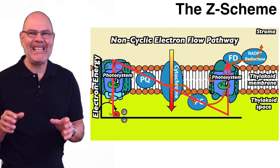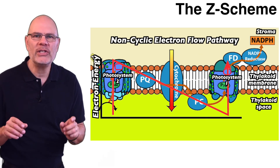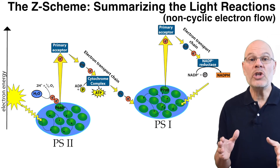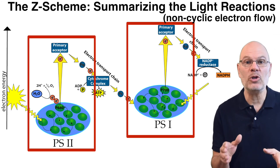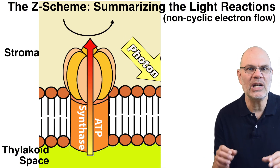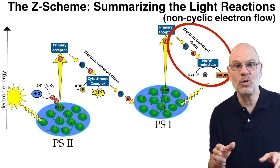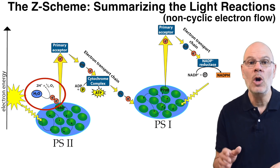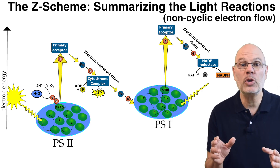Non-cyclic electron flow is also called the Z scheme. Electrons rise in energy in photosystem II, then fall as they go through the electron transport chain of photosystem II, then rise in energy again as they go through photosystem I. To summarize the light reactions: light is captured by photosystems and converted to electrical energy. In photosystem II, electrical energy pumps protons into the thylakoid space, creating an electrochemical gradient used by ATP synthase to make ATP. In photosystem I, electrical energy reduces NADP+ to NADPH. The source of electrons is water, which splits into protons — enhancing the proton gradient — and oxygen gas.